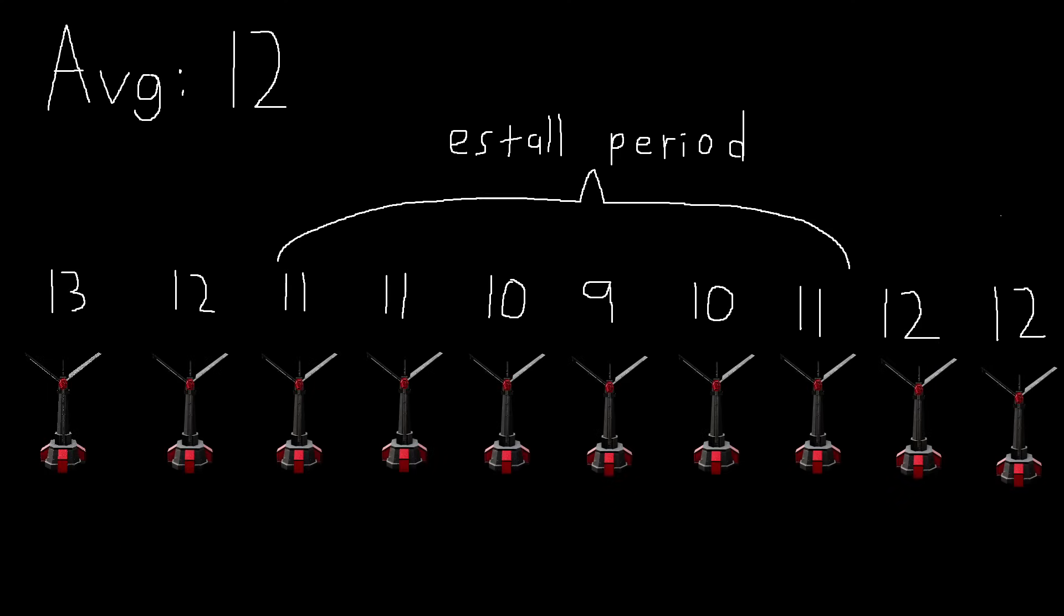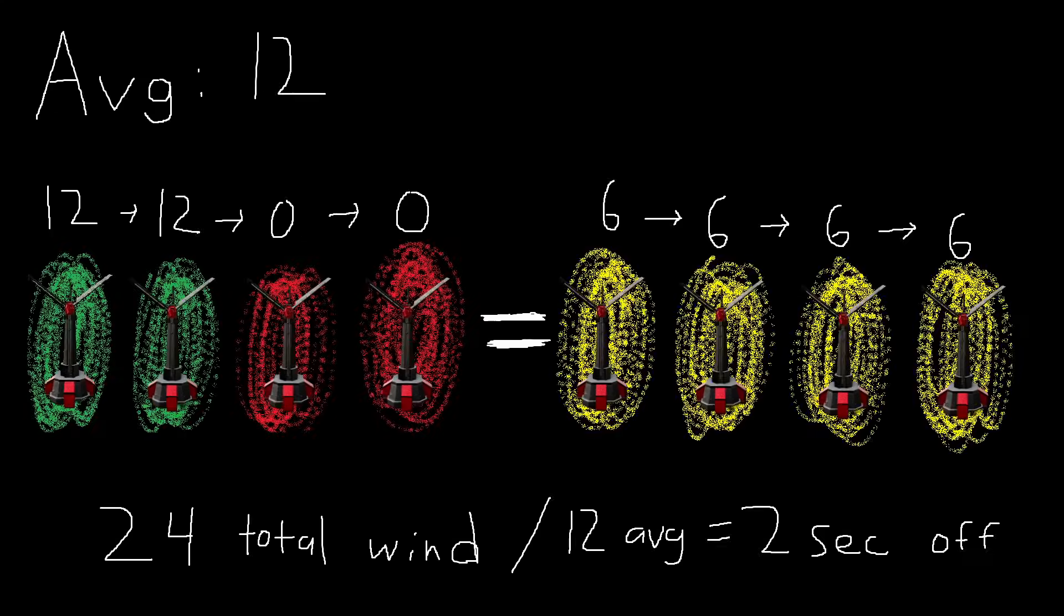Next, I wanted to calculate the amount of e-storage you need to survive an e-stall. First step is to define what an e-stall actually is, respective to wind levels. I defined an e-stall period as any segment of time wind spent below the average. Then I calculated the total amount of wind loss in an e-stall period. For example, if wind average is 12, then any time it's spent below 12 is an e-stall period.